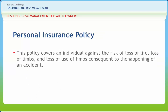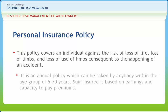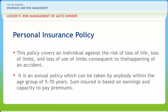The personal insurance policy covers an individual against the risk of loss of life, loss of limbs, and loss of use of limbs consequent to the happening of an accident. It is an annual policy which can be taken by anyone within the age group of 5 to 70 years. The sum insured is based on earnings and capacity to pay premiums. There are three types of benefits. First, on death, the total sum insured is paid as compensation. Permanent total disablement resulting in loss of two limbs, two eyes, or a combination of one limb and one eye also merits payment of the total sum insured. Loss of one limb or sight of one eye results in payment of 50% of the sum insured.